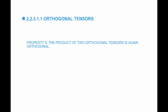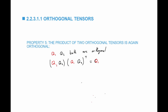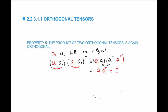To be explicit: if Q1 and Q2 are orthogonal, then (Q1 Q2) multiplied by (Q1 Q2) transpose equals Q1, Q2 multiplied by Q2 transpose Q1 transpose, which equals Q1 Q1 transpose, which equals I. Therefore the product Q1 Q2 is also an orthogonal tensor, since multiplying it by its transpose gives I.